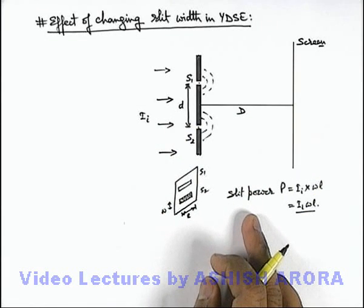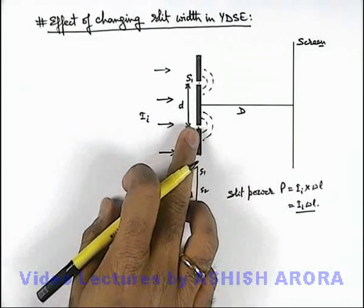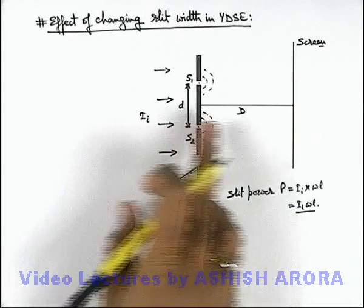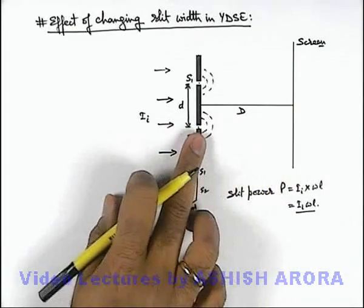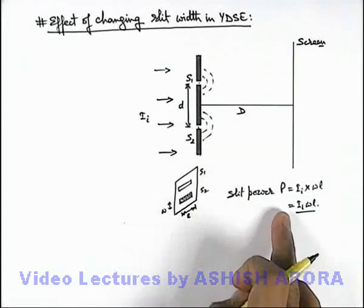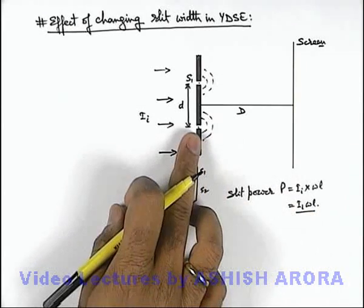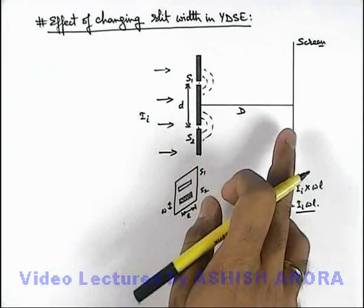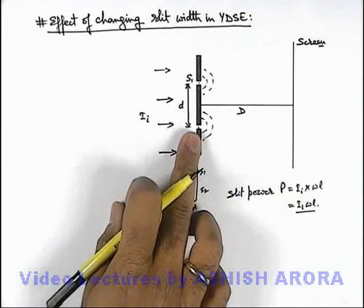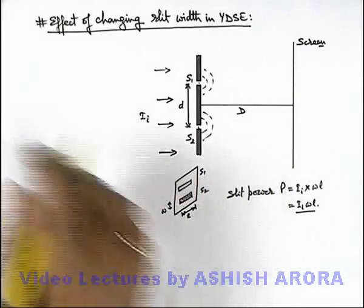So slit power is i w l, which is producing a light intensity on screen. In this situation we can write, whichever power will be emitted from the slit, the intensity on screen will be proportional to this power. And as this power is proportional to the width, we can say that intensity on screen is proportional to the width of this slit.